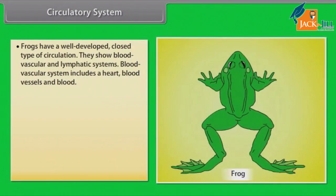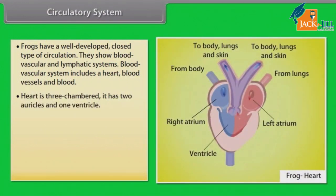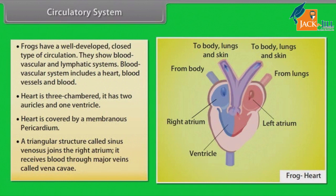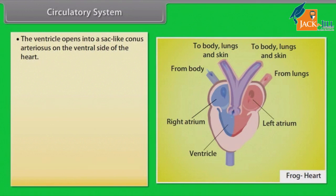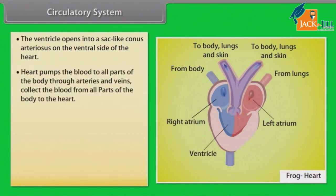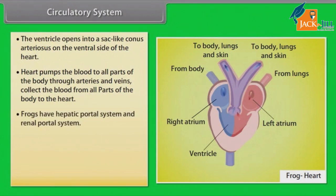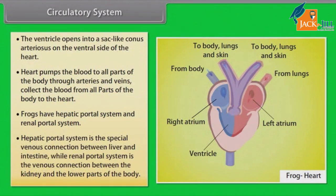Circulatory System: Frogs have a well-developed closed type of circulation. They show blood vascular and lymphatic systems. The blood vascular system includes a heart, blood vessels, and blood. The heart is three-chambered — two atria and one ventricle — and is covered by a membranous pericardium. A triangular structure called the sinus venosus joins the right atrium, receiving blood through major veins called venae cavae. The ventricle opens into a sac-like conus arteriosus on the ventral side of the heart. The heart pumps blood to all parts of the body through arteries, and veins collect blood from all parts back to the heart. Frogs have a hepatic portal system and a renal portal system; the hepatic portal system is the special venous connection between the liver and the intestine.